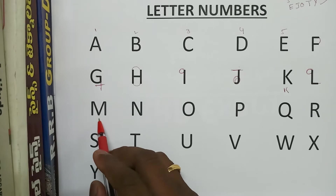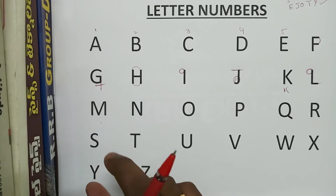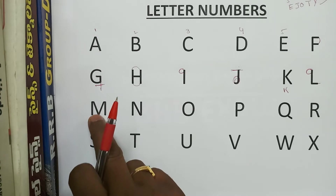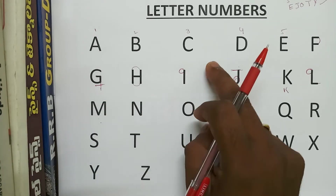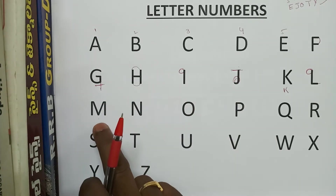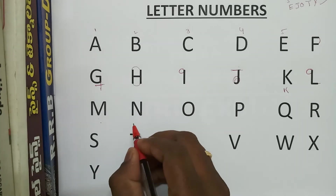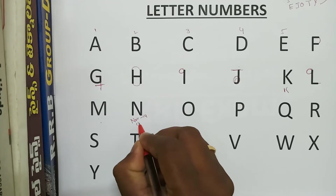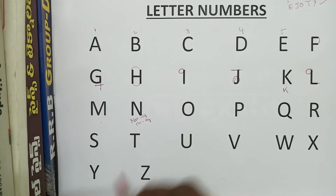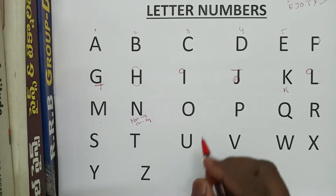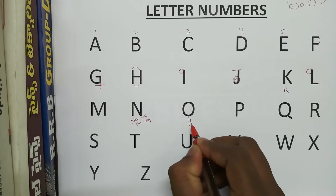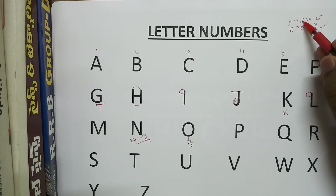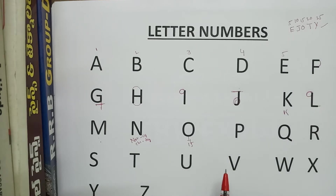M code is 13 — M is anti-clockwise rotated and looks like 3, so 13. N code is 14 — November 14 is Children's Day, good way to remember. O code is 15, as already covered in the EJOTY code.